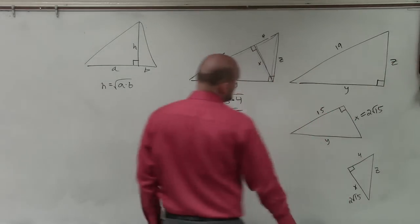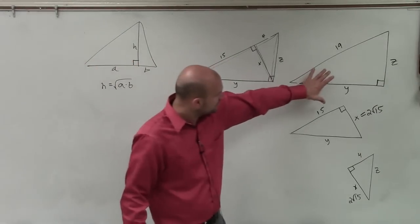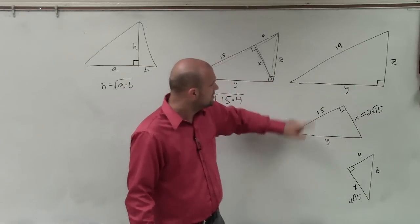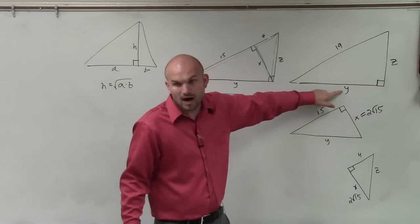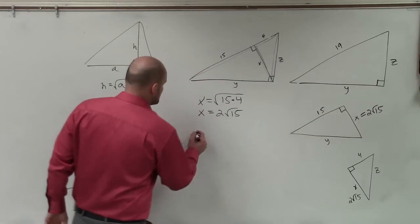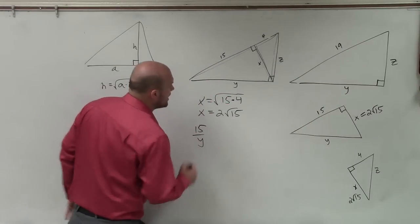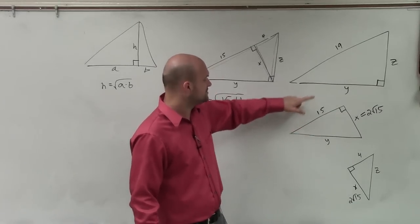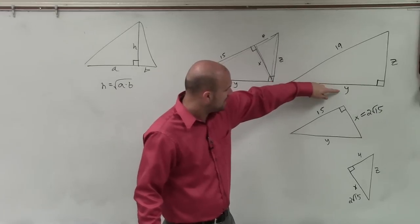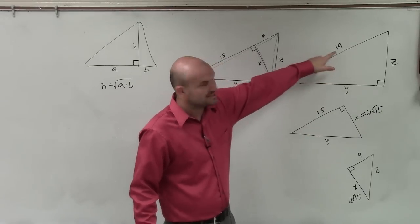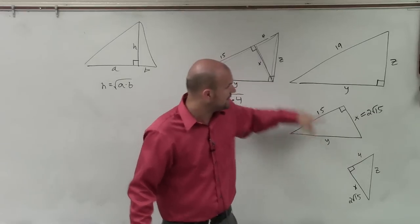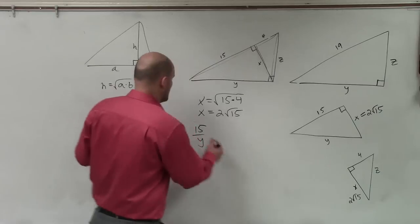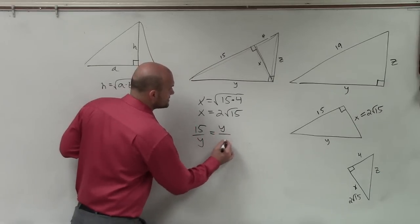So again, what we're going to do is we're going to set up some ratios. So let's go and look at these two ratios. We need to figure out what y is. So I can say 15 is to y. Would you guys agree those are corresponding sides? So I'll write 15 is to y. Wait, no, sorry. 15 is to that y as y is to 19. Would you guys agree? This is the hypotenuse? That's the hypotenuse? So as y is to 19.